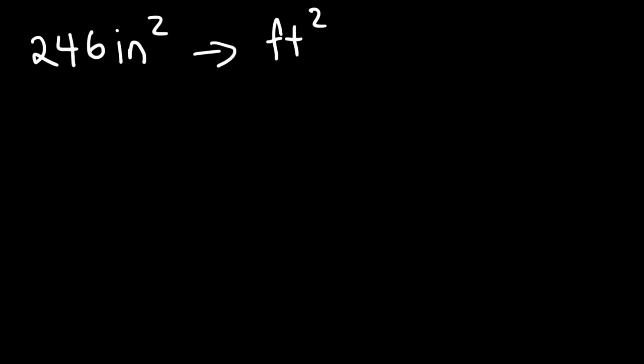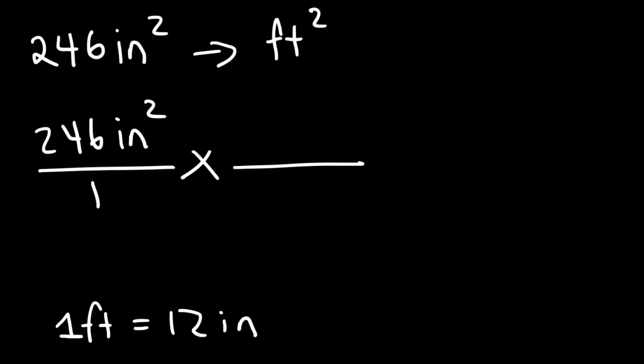Now, how many inches are in a foot? You need to know that in one foot, there are 12 inches. And so let's start with what we're given, 246 square inches over one. Now for the next fraction, we're going to use our conversion factor. So we're going to put the unit inches on the bottom and feet on top so that these will cancel. Now we know that 12 inches is equal to a foot. However, here we have square inches. This is inches to the first power, so they won't completely cancel yet.